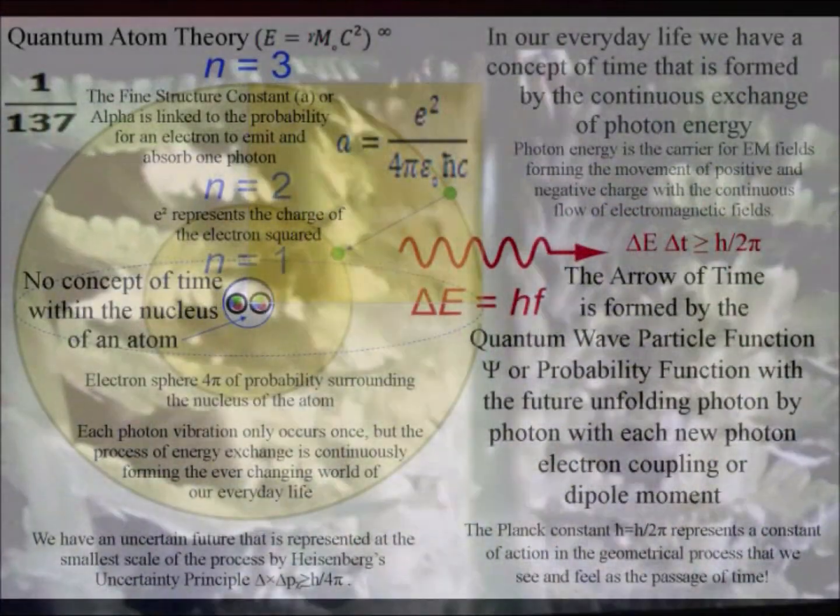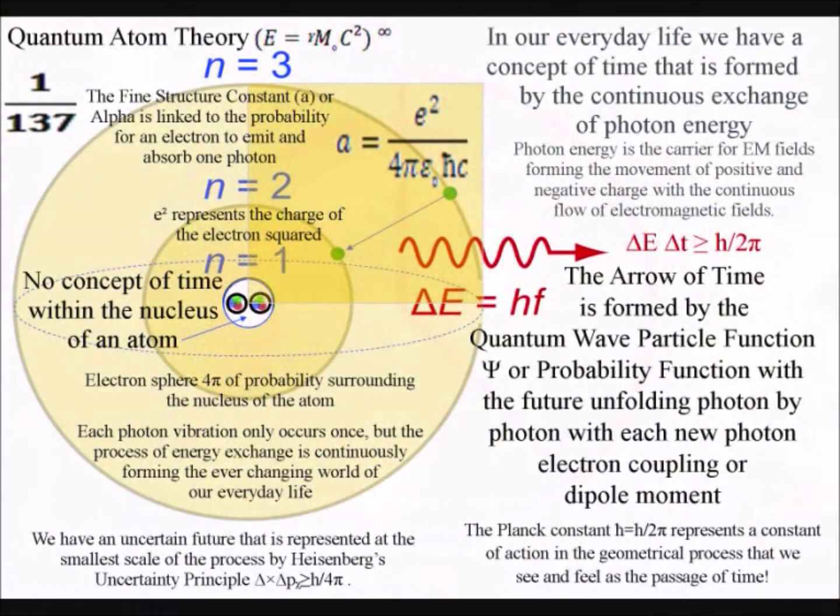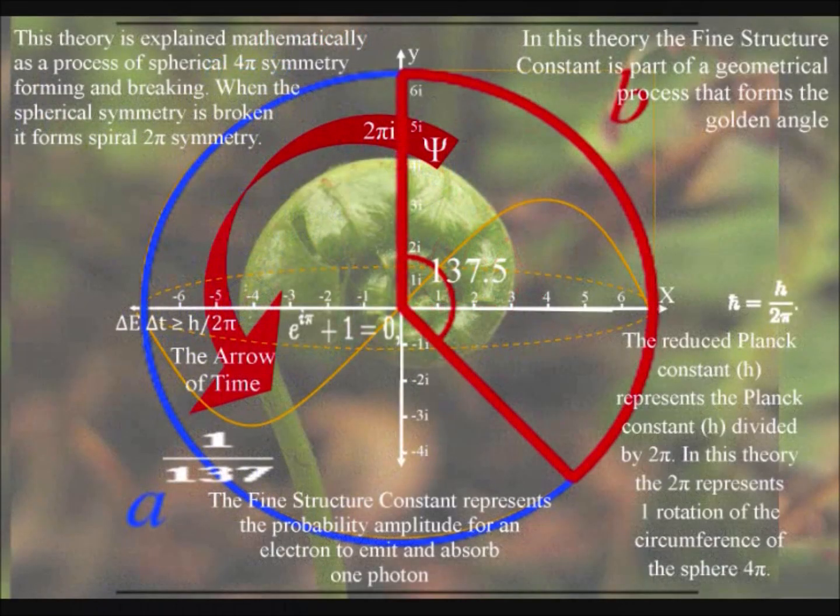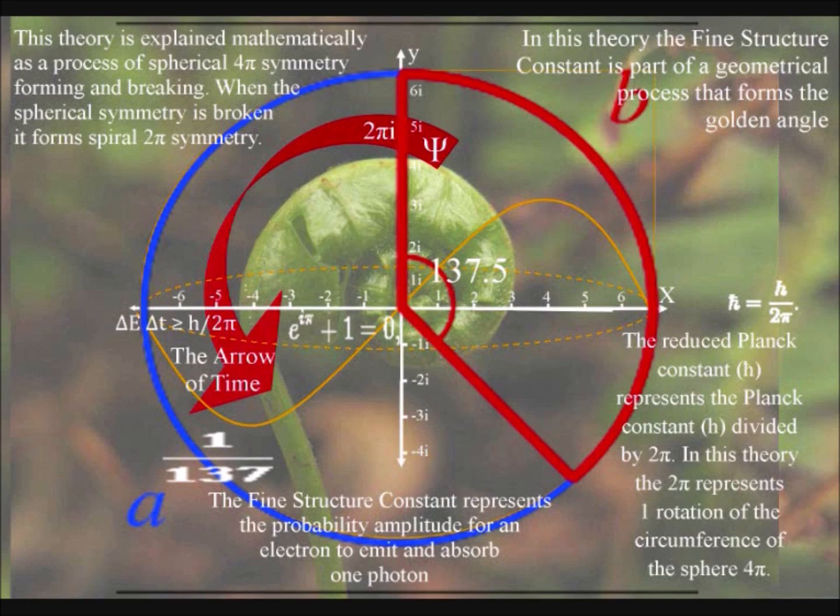In this theory the Fine Structure Constant as part of a geometrical process forms the golden angle and with it the Fibonacci spiral that we see almost everywhere in nature.